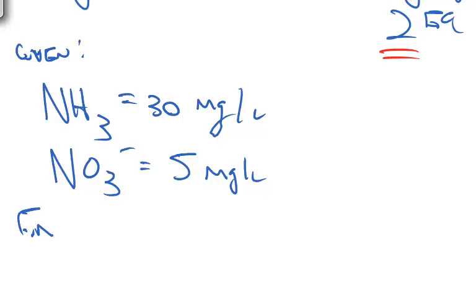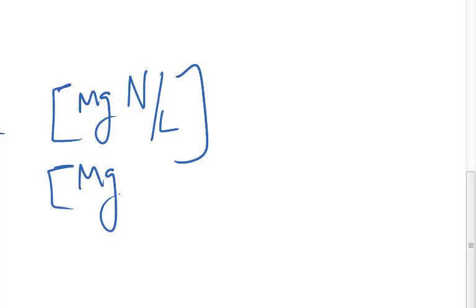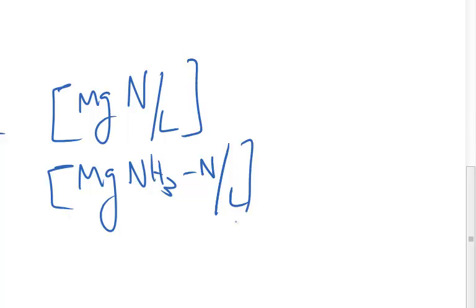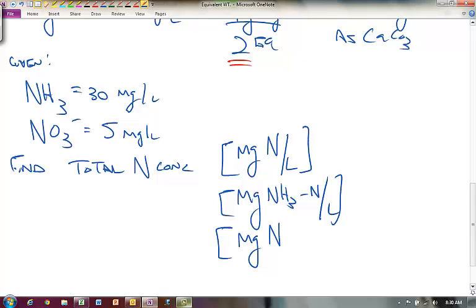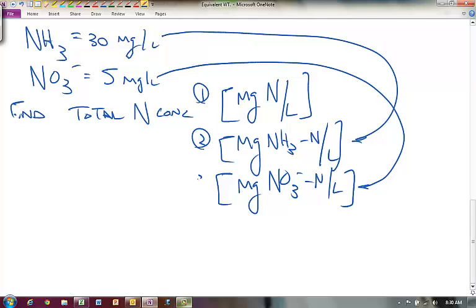Given, and we want to find the total nitrogen concentration. Total nitrogen concentration in units of milligrams of nitrogen per liter, milligrams NH3 nitrogen per liter, and lastly, in milligrams of nitrate-nitrogen per liter. So those are very common. So we can put this one in this form, and we can put this one nitrate into this form. Okay, so solving step number one, two, three.